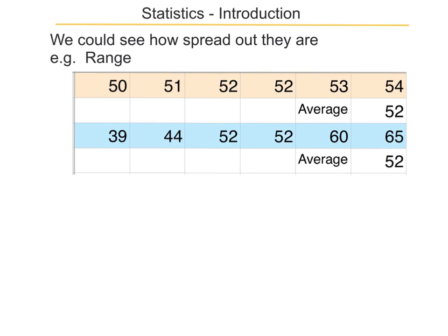It's also useful to know how spread out the information is. Here are six pieces of data which has an average of 52. Here are six other pieces of data that also have an average of 52, but when you look at it, you can tell straight away something is different.